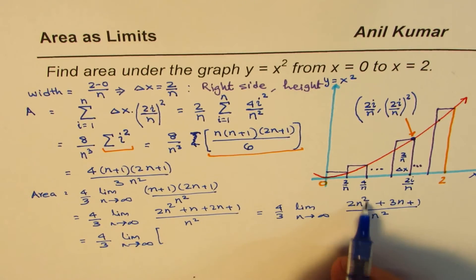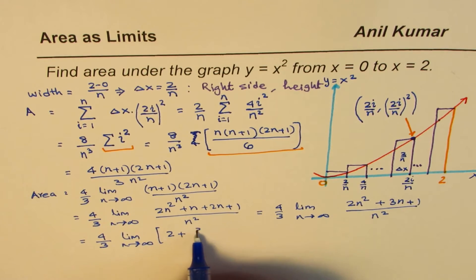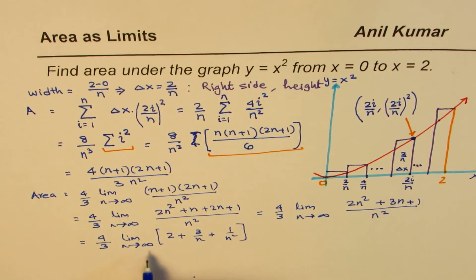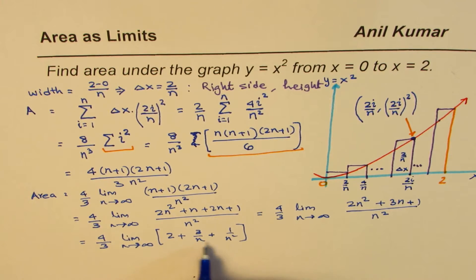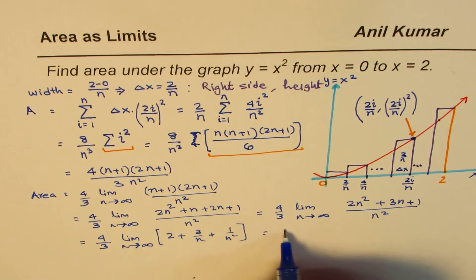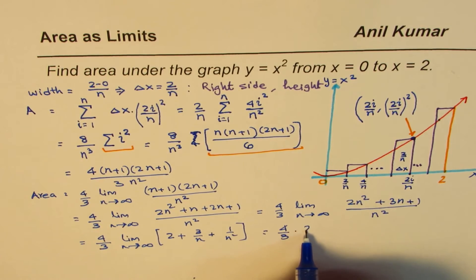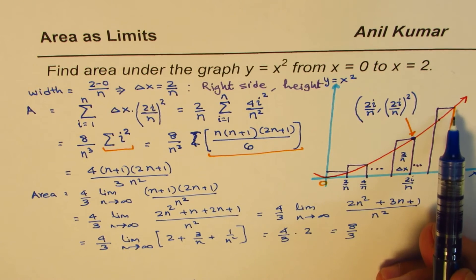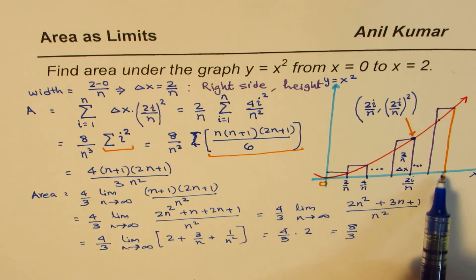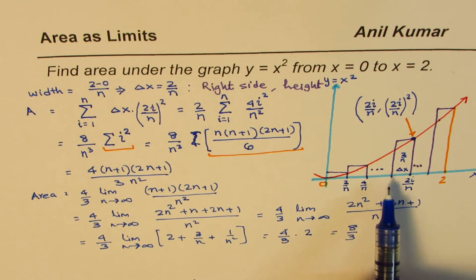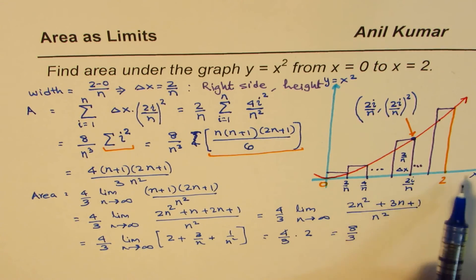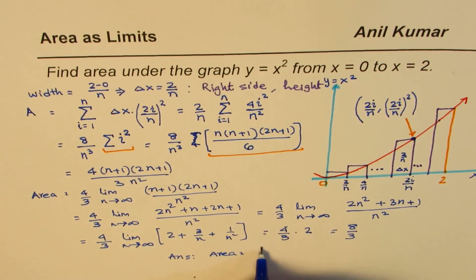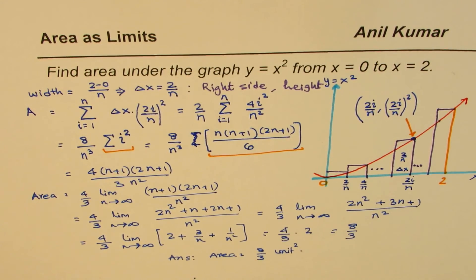As n approaches infinity, 3/n → 0 and 1/n² → 0. So the limit equals (4/3) × 2 = 8/3. The area under y = x² from x = 0 to x = 2 is 8/3 square units.